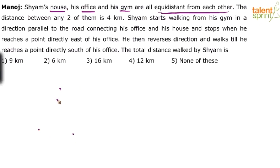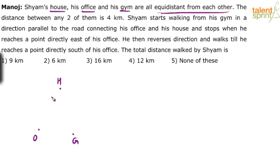So these are the three points — one is his house, another is the gym, and the third is his office. All three are equidistant. So let's say this is his house, here is his office and here is the gym. All three are equidistant and the distance between any two of them is 4 kilometers. So that's an equilateral triangle with side length 4 kilometers.